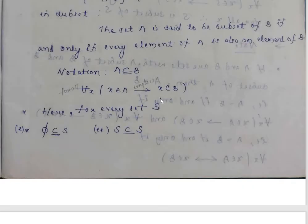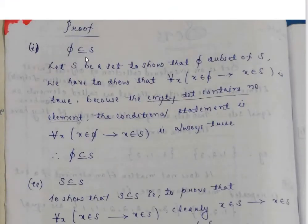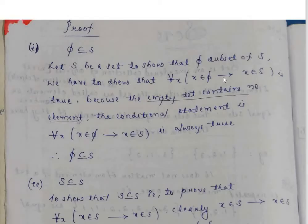For any set S, the null set (empty set) is a subset of S. Proof: Let S be a set. We have to show that phi is a subset of S — that is, for all x, x element of phi implies x element of S is true. The empty set contains no elements, so the conditional statement is vacuously always true.